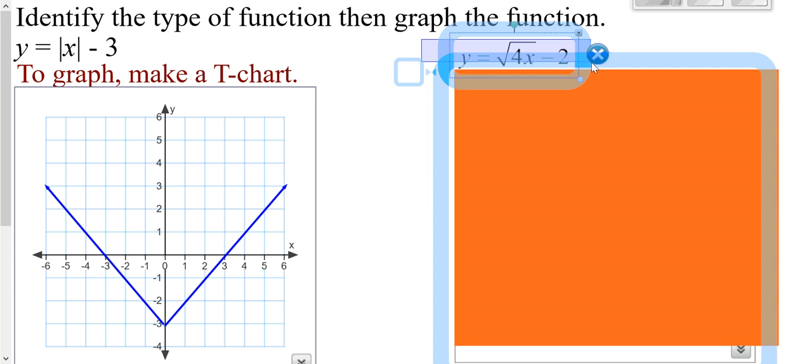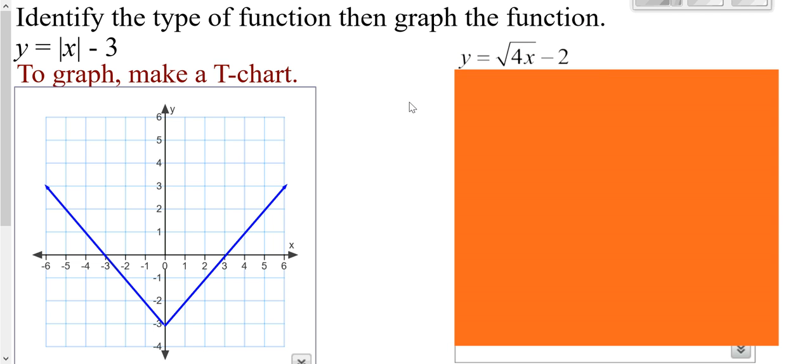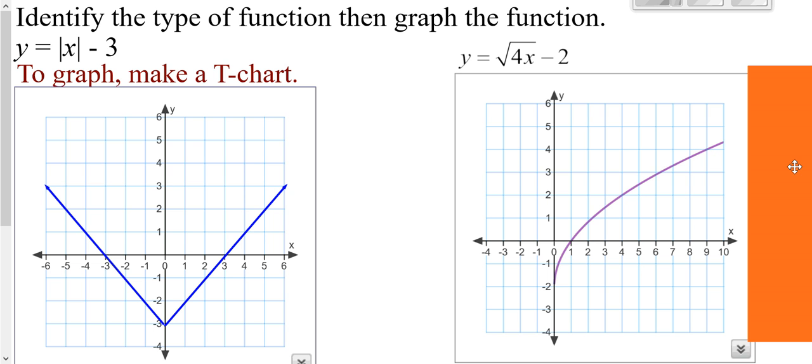Over here, this is a square root function. We talked about this earlier in our unit. You've got to set what's inside of your square root equal to zero or greater than or equal to zero. 4x greater than or equal to zero. Solve it for x by dividing by 4 and you get x is greater than or equal to zero. That's your domain. You make a t-chart starting out at zero, one, two, three, four, and so on, because it's greater than or equal to zero for your domain. And plot your points and you would get this shape.